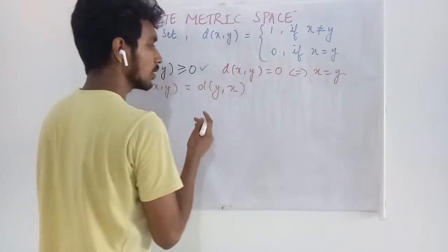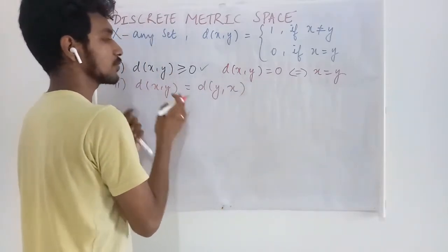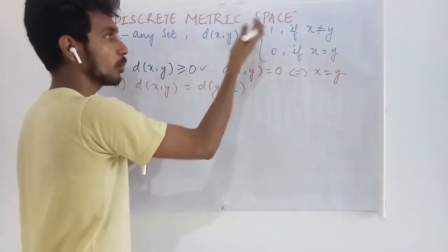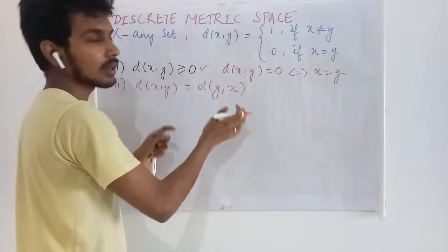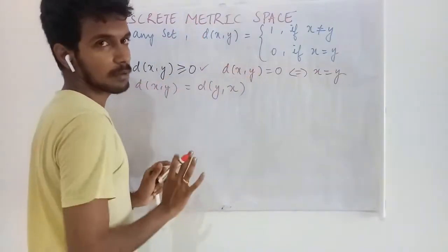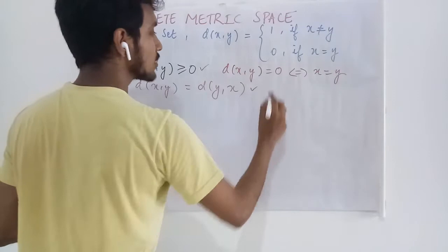What is bothering? If we write d(x,y) or d(y,x), it is going to be 1 if they are different and 0 if they are same. The second condition is also satisfied.